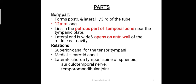The first part is the bony part, which forms the posterior and lateral one-third of the tube. It is 12 mm in length and lies in the petrous part of the temporal bone near the tympanic plate. The lateral end of the bony part is wide and opens on the anterior wall of the middle ear cavity or tympanic cavity.